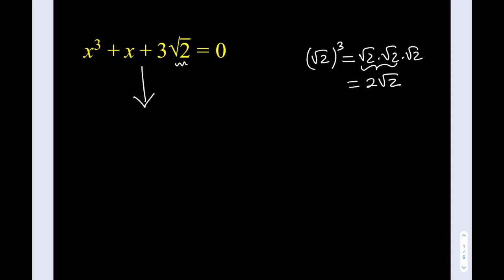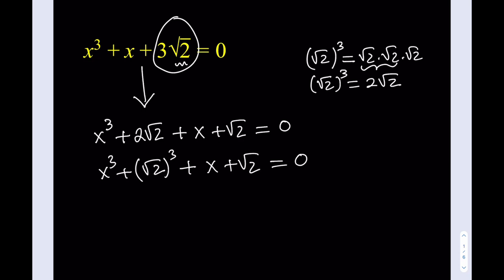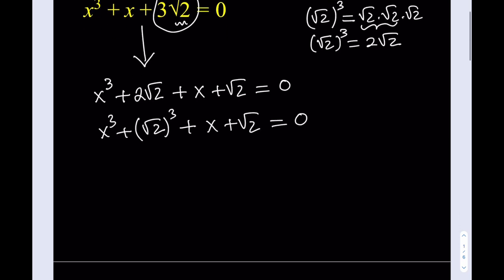I'm going to break it down like this: x cubed plus 2 times the square root of 2, plus x plus the square root of 2 equals 0. What I did was take the constant term and break it apart. The 2 root 2 here can actually be written as square root of 2 to the third power. So we should be seeing a sum of two cubes here: x cubed plus square root of 2 cubed. This was the manipulation I was talking about.